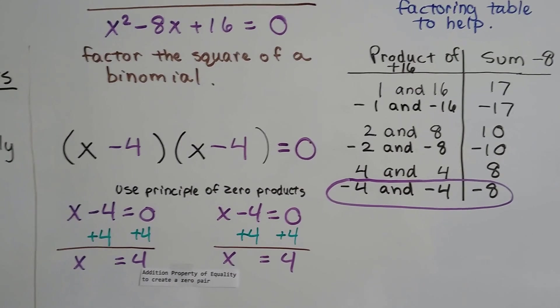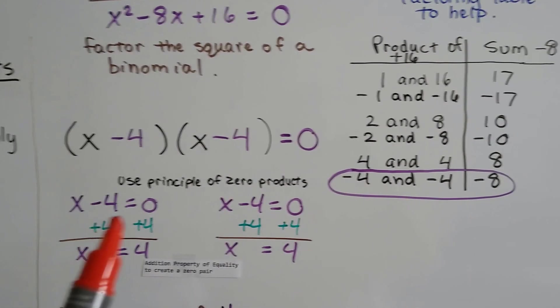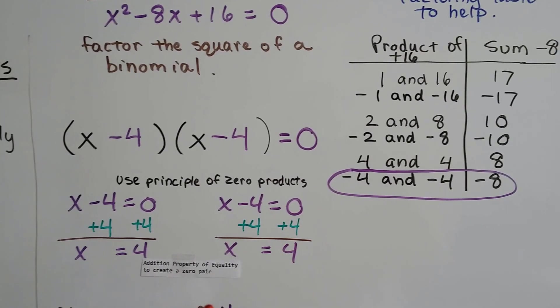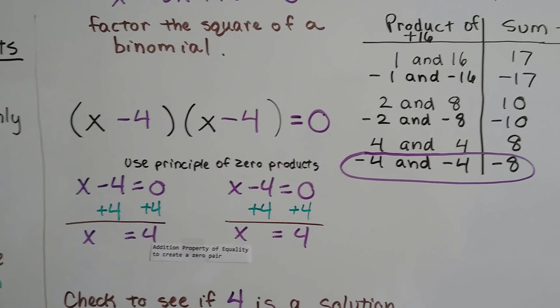Then we use the principle of zero products, and we do x minus 4 equals 0 and x minus 4 equals 0. Well, that's the same thing, so we could really just do one of them, couldn't we?